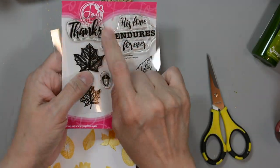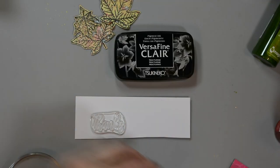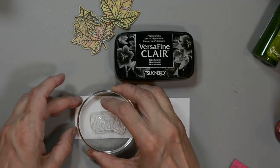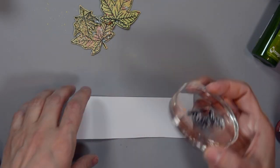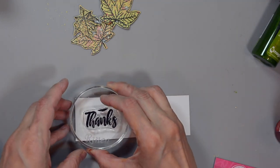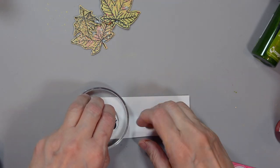So I'm going to trim, no before I trim my project down, I'm going to stamp our sentiment. I have another piece of that same accent 80 pound cardstock. And I'm going to stamp our sentiment. I'm using the large scripty thanks that comes in the stamp set.